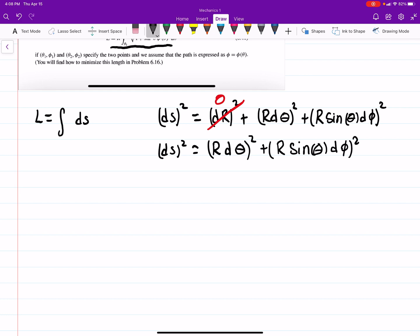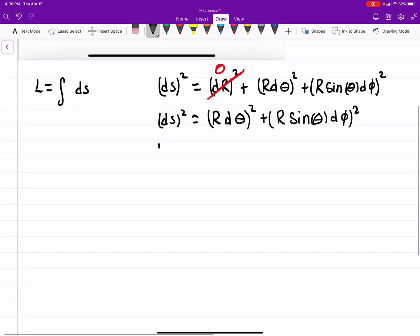Okay. So taking the square root of both sides, and I'll go ahead and factor out an r. You're left with r squared d theta squared plus sine squared theta d phi squared.